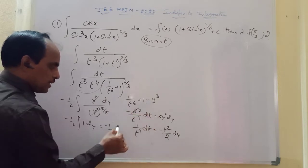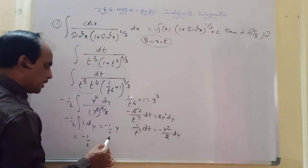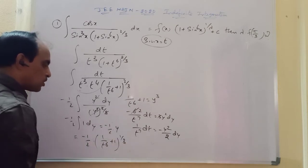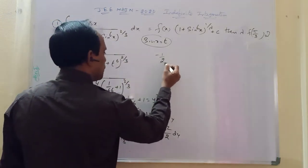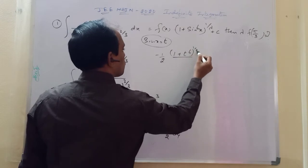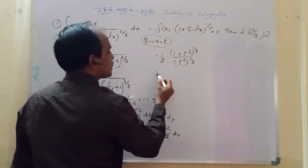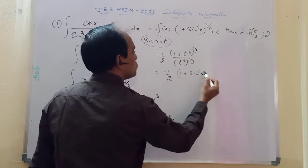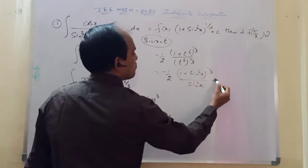Integrating 1 with respect to dy gives y. So the answer is minus 1/2 into y, which means minus 1/2 into (1/t⁶ + 1)^(1/3), and substituting back t = sin x, we get minus 1/2 into (1 + sin⁶x)^(1/3) divided by sin²x, plus c.